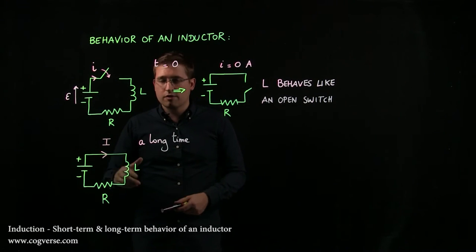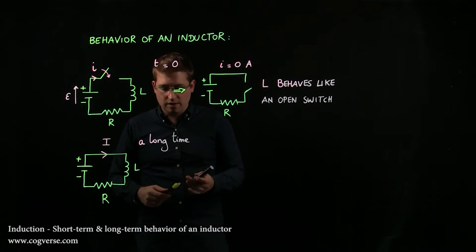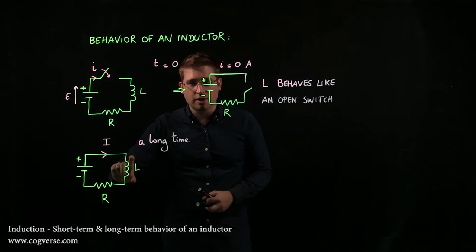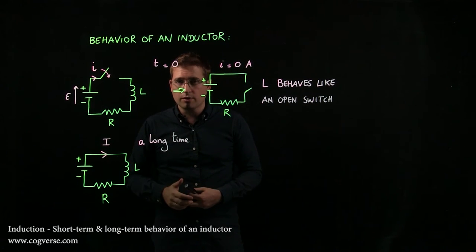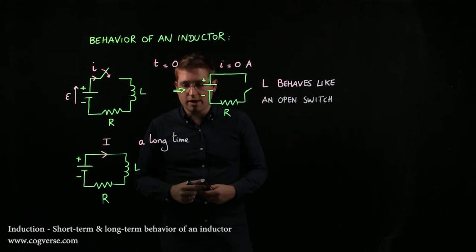And the current, if it no longer changes, there will no longer be self-inductance in the inductor. And therefore, the voltage across the inductor goes to zero. Now, if the voltage across the inductor goes to zero, that means that the inductor behaves like a wire.